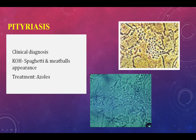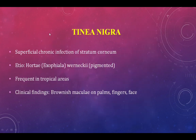Clinically, pityriasis versicolor presents as lightly pigmented areas on the torso, arms, and abdomen — sometimes scaly, chalky, or with folliculitis. Diagnosis involves clinical suspicion, skin scraping showing the spaghetti and meatballs appearance on KOH mount, and fungal culture. Treatment is with azoles.